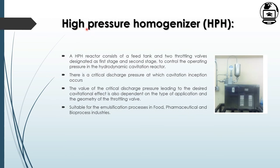The high pressure homogenizer contains a feed tank and two throttling valves — labeled stage 1 and stage 2 — that control operating pressure in hydrodynamic cavitation reactors. The cavitation process starts at critical discharge pressure, and the value of discharge pressure leads to the desired cavitation effect, depending on the type of application and geometry of throttling valves. This reactor is suitable for emulsification processes in food, pharmaceuticals, and wire processing industries.